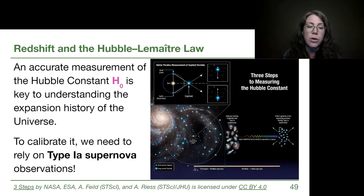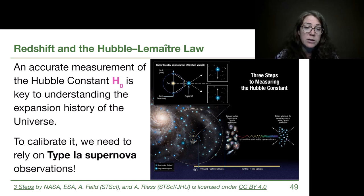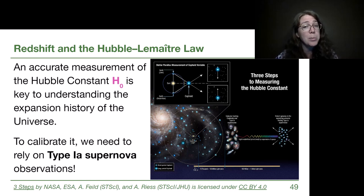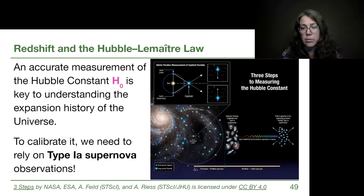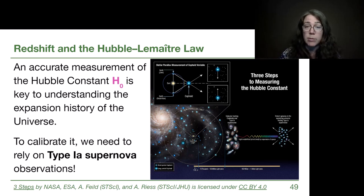We call these types of objects standard candles or standard light bulbs, because they all have the same known true brightness — the same luminosity, the same absolute magnitude. Type 1a supernovae are one of a couple of different objects that fall into this category.